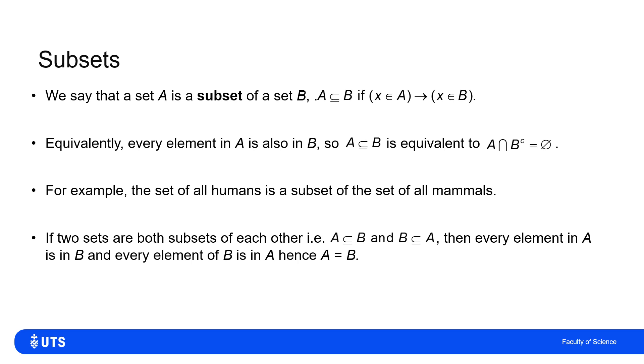Also, if I've got two sets which are both subsets of each other, A is a subset of B and B is a subset of A, then I know that every element in A is also in B, and I also know that every element of B is also in A. Then A and B must be an identical set of elements. So I can say the two sets are equal, and hence A equals B.